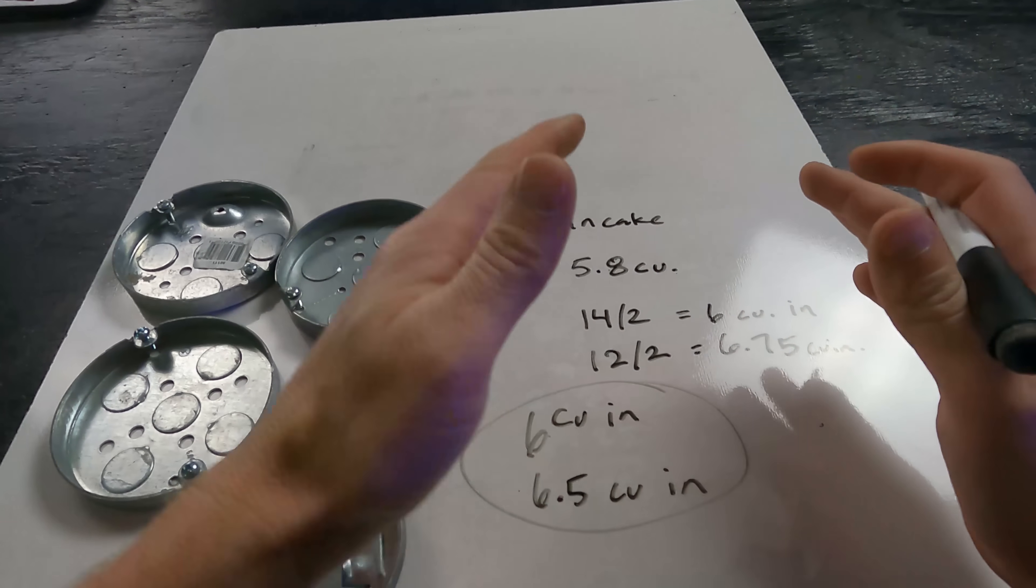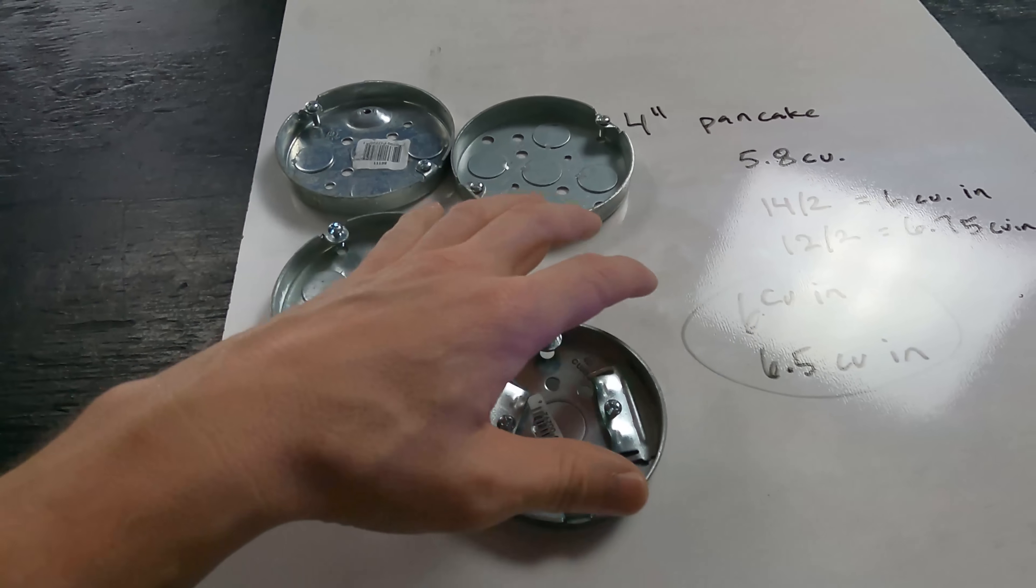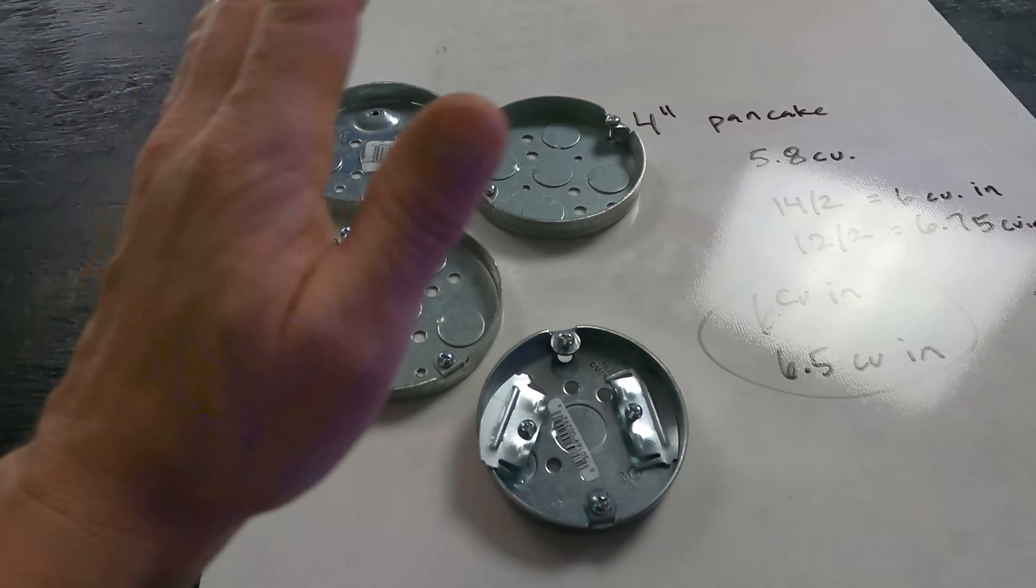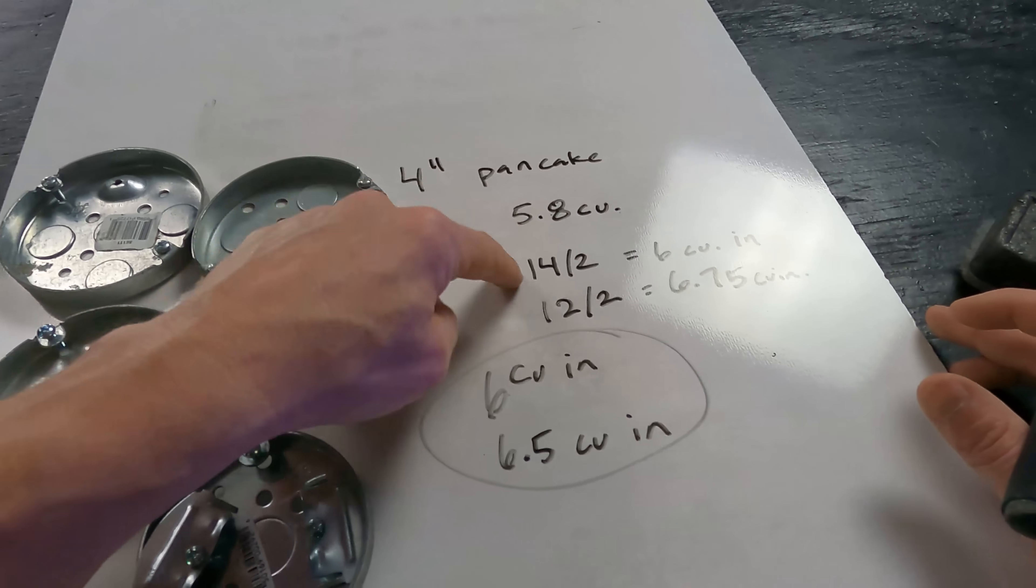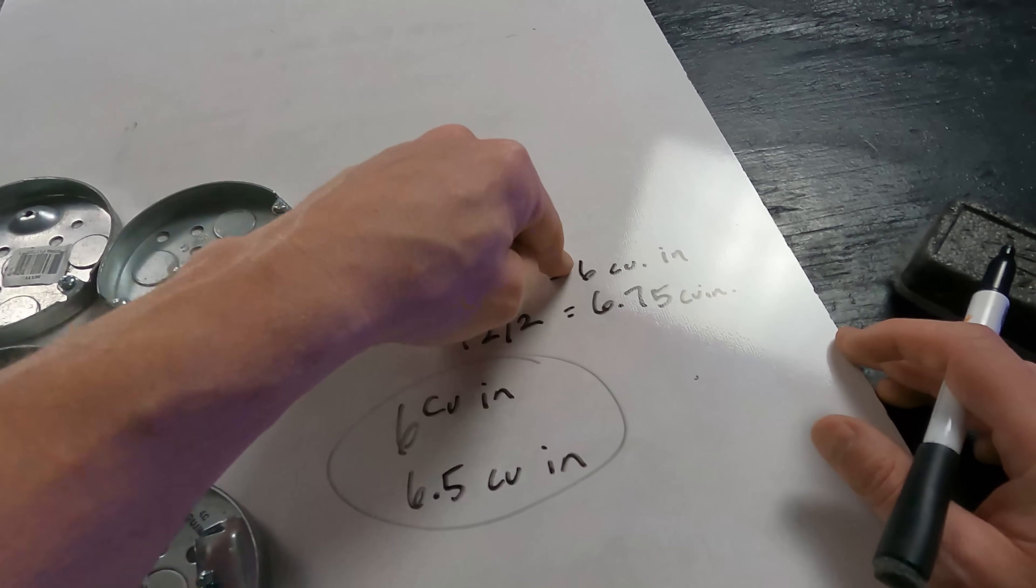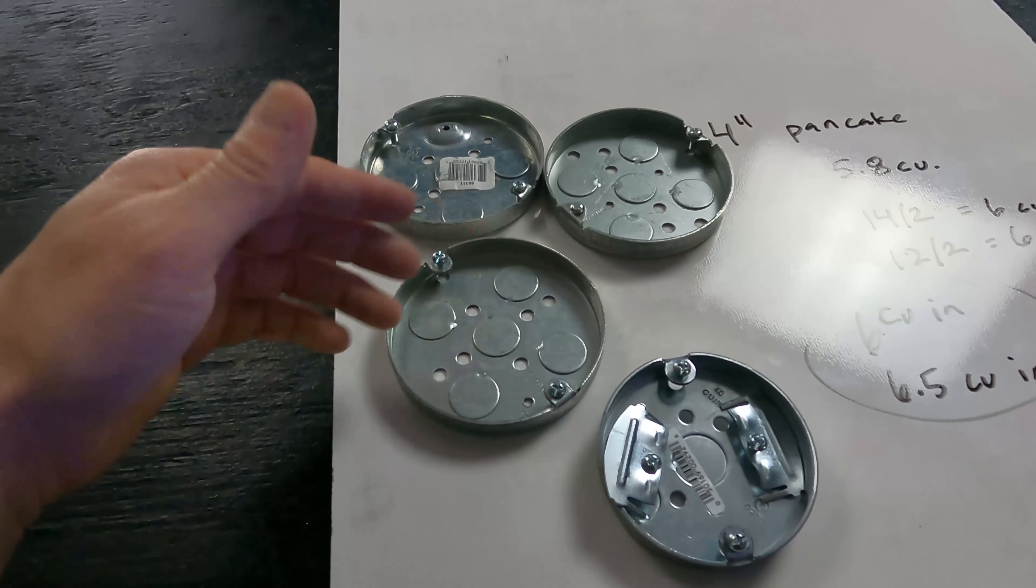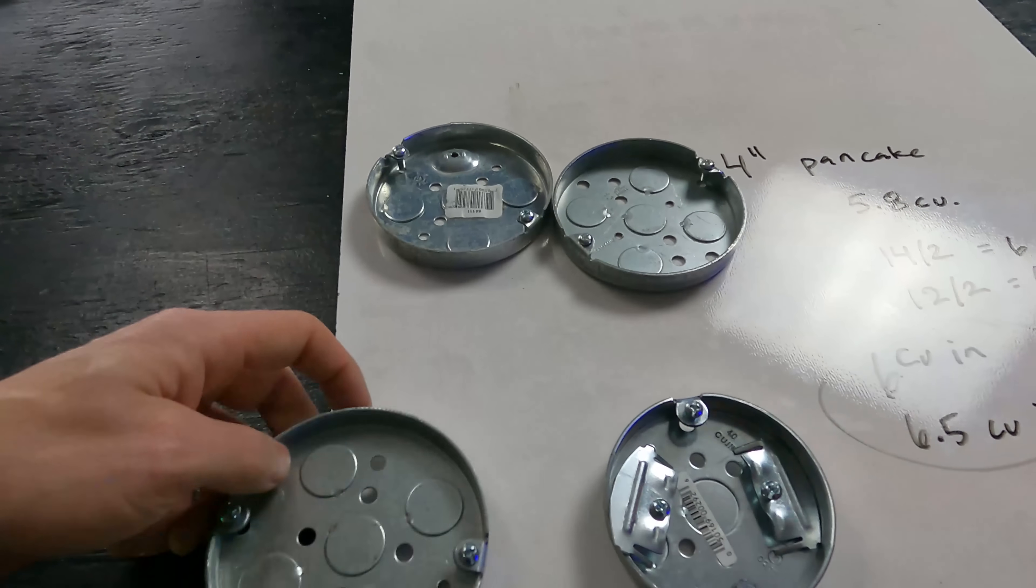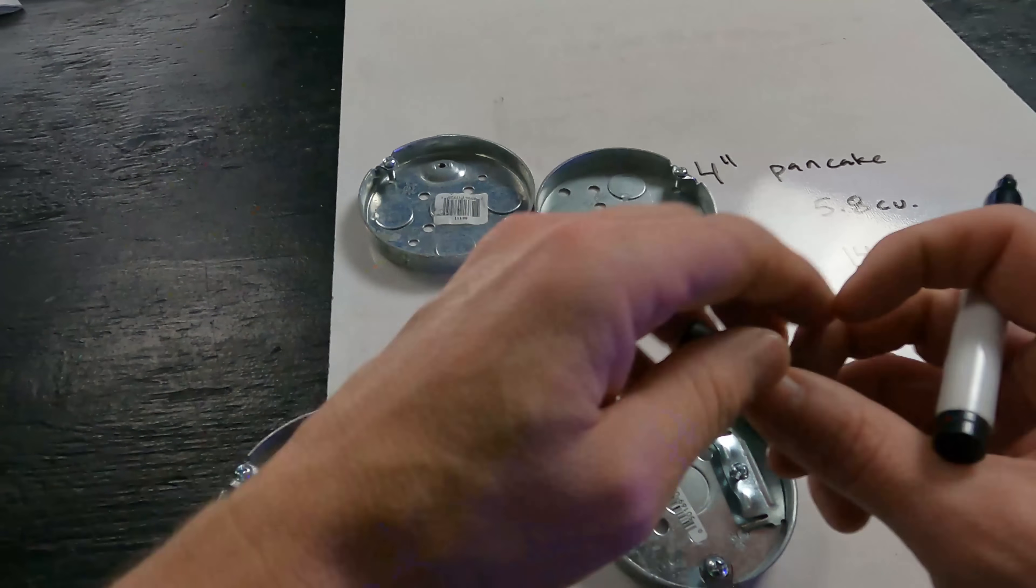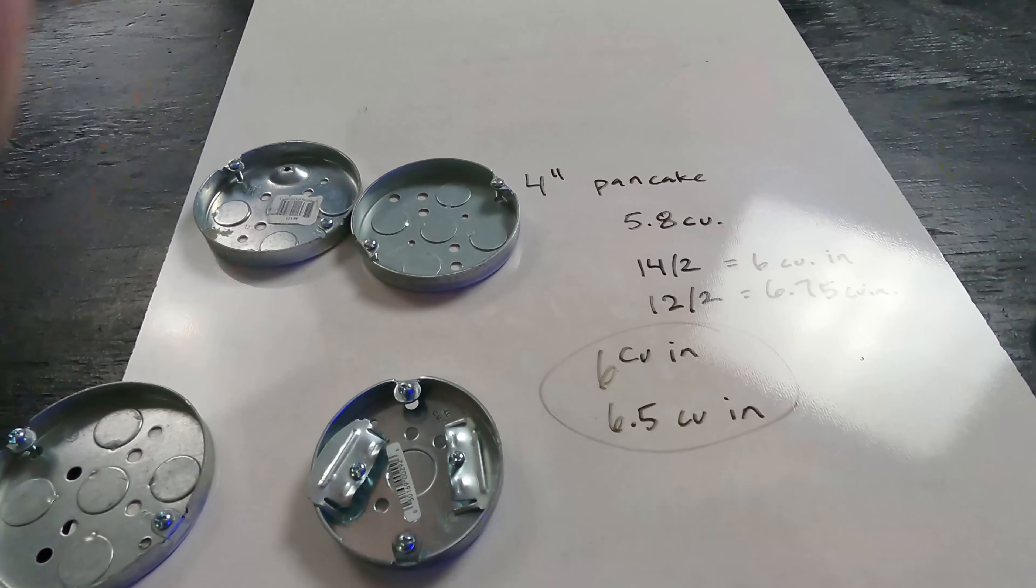We cannot use a four-inch pancake by code. We can use them out in the field all we want I suppose, but you can't use them to code. The only situation that actually works for any pancakes is when you use 14-2, because you have six cubic inches worth of conductor and six cubic inches worth of box. But you have to make sure you don't have a five cubic inch pancake. You need to make sure it's at least a six or six and a quarter. That is the only time that pancakes can work.